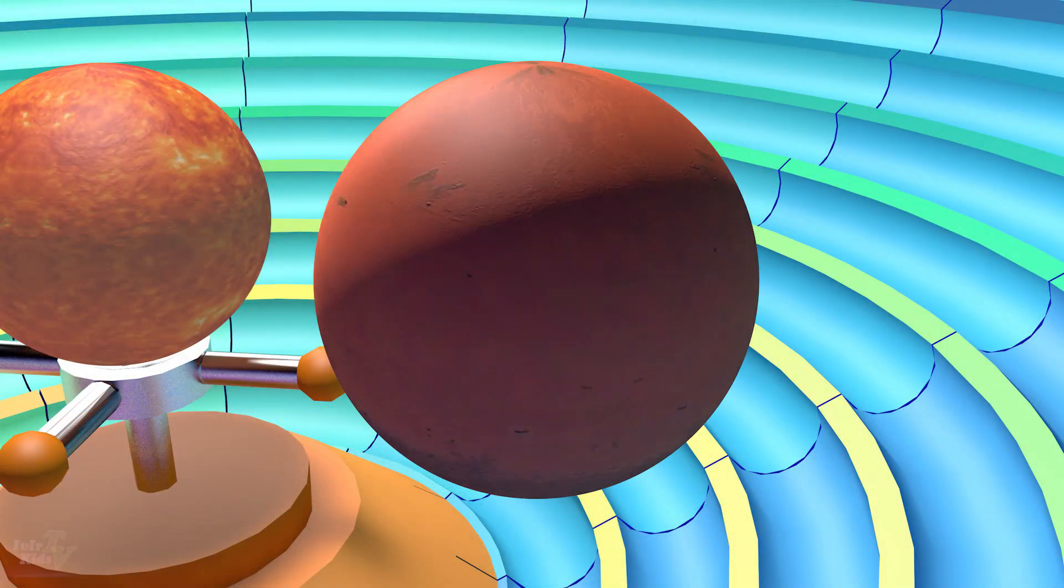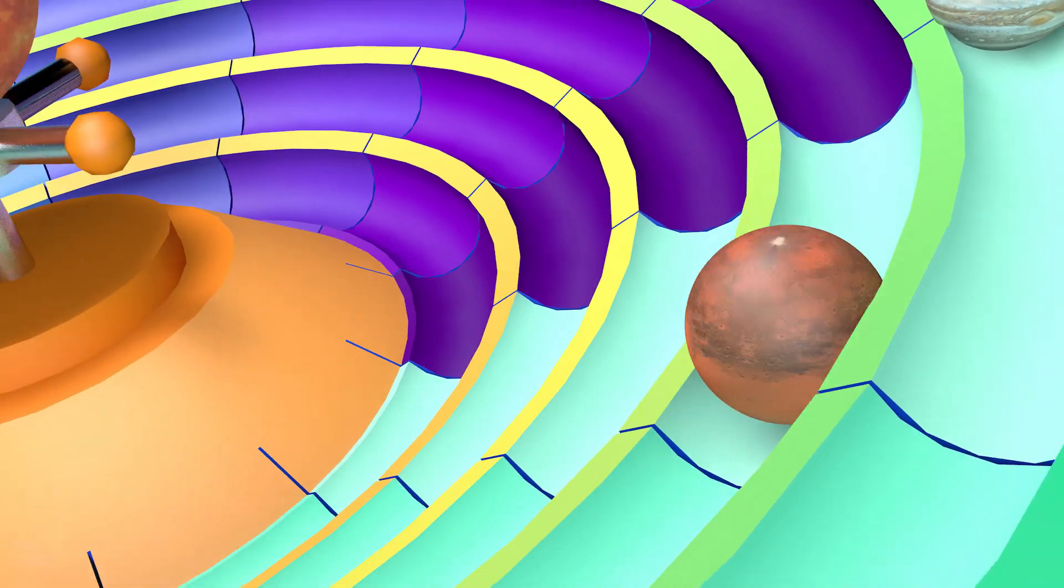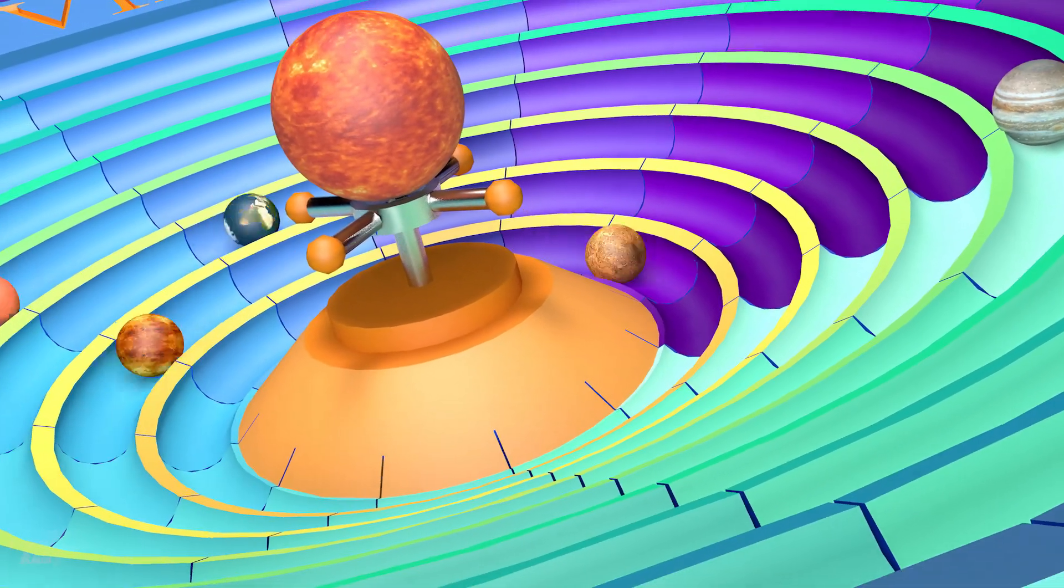And this is our neighbor, Mars. And it does one turn in 1.88 years, or 687 days.